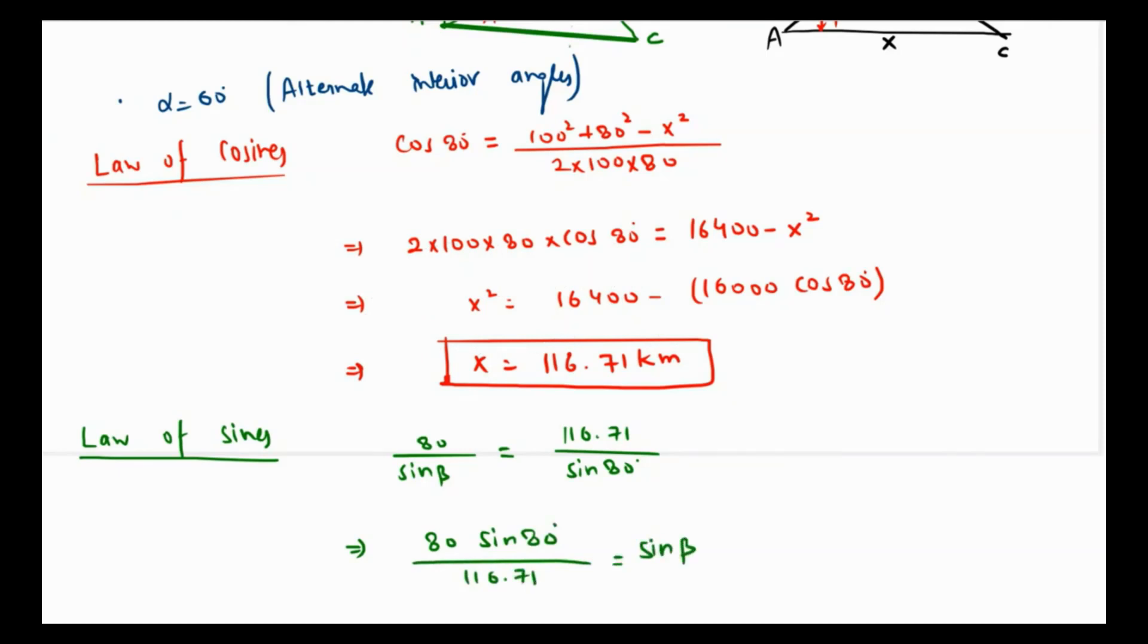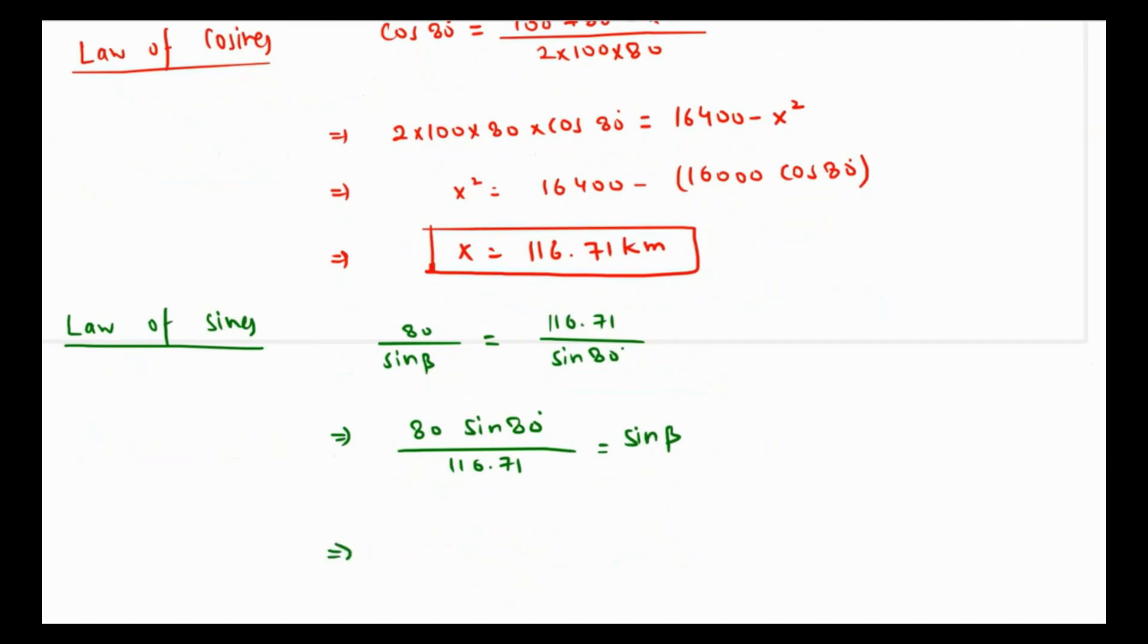If you take sine inverse both sides, the value of beta comes out as, let me grab my calculator. Remember your calculator should be in degree mode. That is coming as 42.46 degrees.